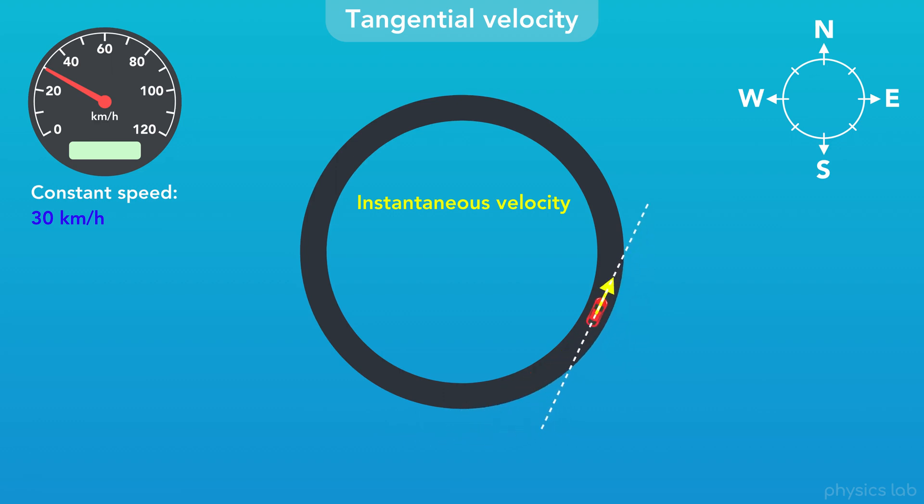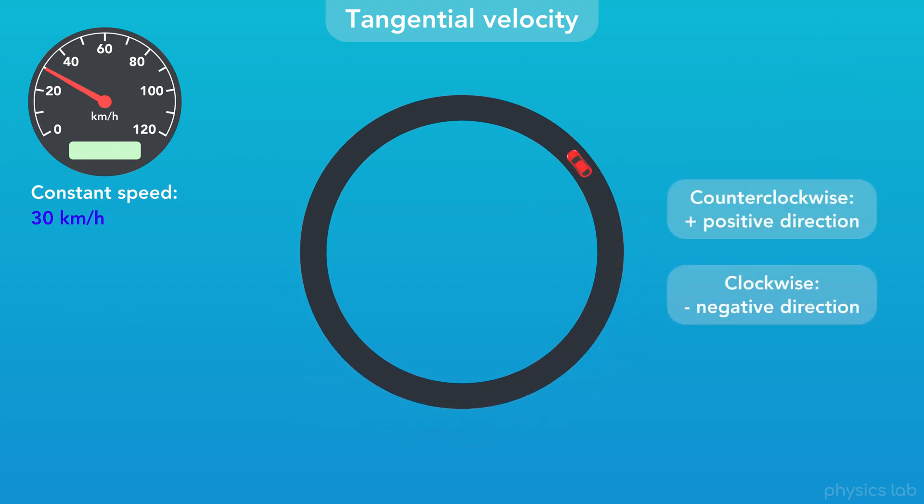The direction of the instantaneous velocity is not important when we're using the equations for circular motion from this video. It's enough to describe the velocity as counterclockwise or clockwise, which is positive or negative. But the direction of the instantaneous velocity is a concept you'll be expected to know.